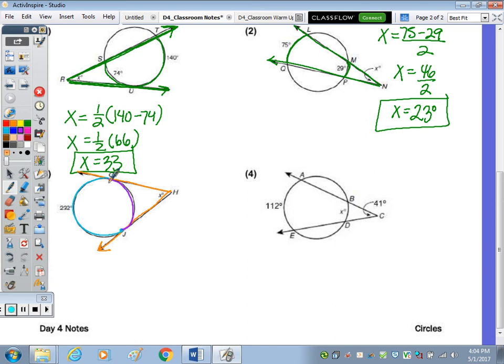So we first have to find J to G by taking 360 and subtracting the 232 to find the rest of the circle. 360 minus 232 is 128. So this is 128 degrees. So now X equals half the difference of 232 and 128. Subtracting means we're going to take half of 104 and X is equal to 52.